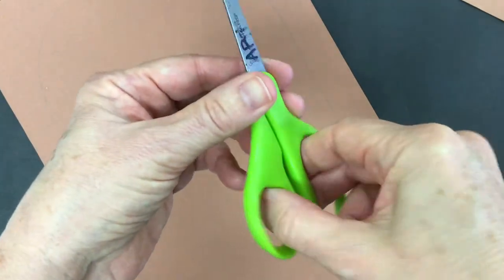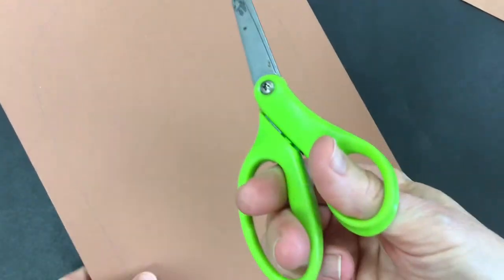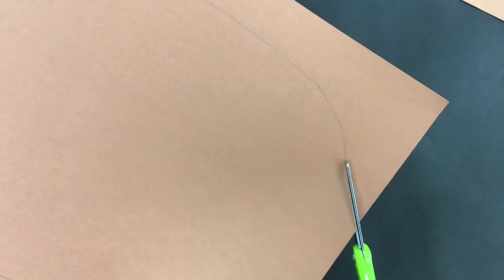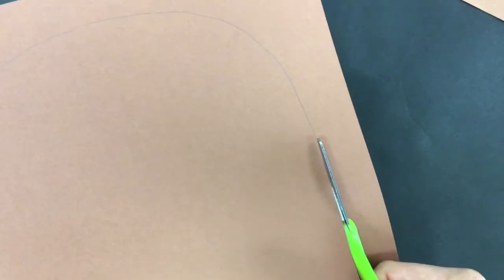You'll take your scissors and put your finger on the big hole and your thumb in the little hole. Thumb is on top and you're gonna crunch, open, crunch, open, crunch, all the way around this big huge oval.